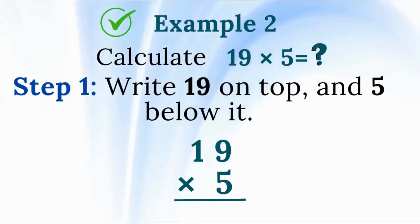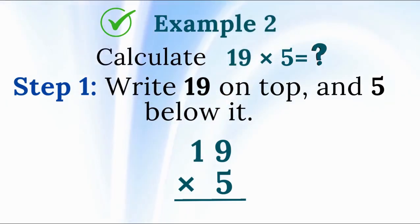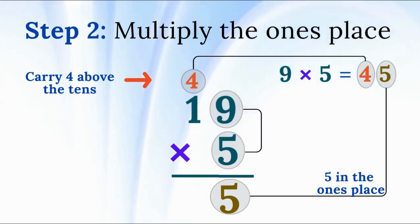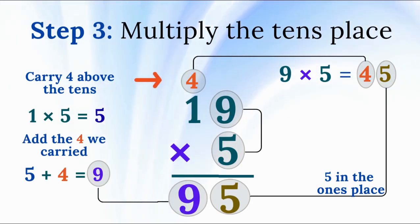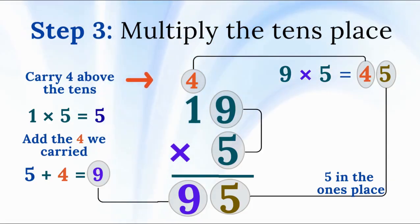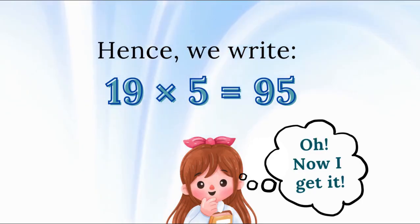Example 2: Calculate 19 times 5 using the stacked form. Step 1: Write 19 on top and 5 below it. Step 2: Multiply the 1's place — 9 times 5 equals 45. Write down the 5 in the 1's place and carry the 4, placing it above the 10's column. Step 3: Multiply the 10's place — 1 times 5 equals 5. Add the 4 we carried, and we get 9. The final answer is 95. Hence, 19 times 5 equals 95.